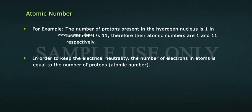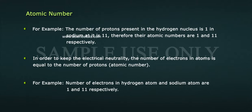In order to keep the electrical neutrality, the number of electrons in atoms is equal to the number of protons, atomic number. For example, number of electrons in hydrogen atom and sodium atom are 1 and 11 respectively.